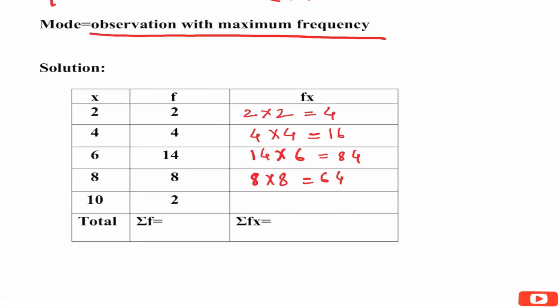Lastly, f value is 2, corresponding x value 10. Multiplication 20. Next we find the totals. Sum of f, summation of f values, that is we add 2, 4, 14, 8 and 2. The addition comes to be 30.